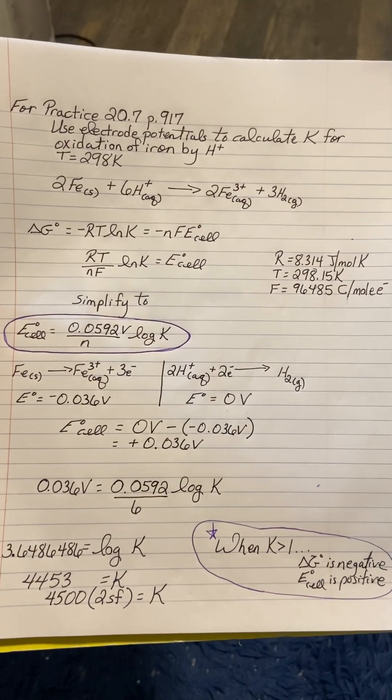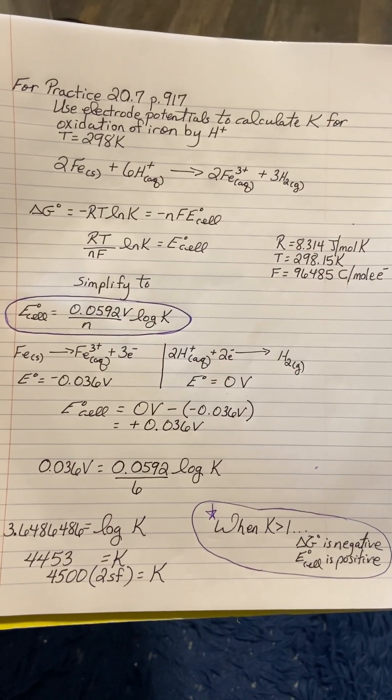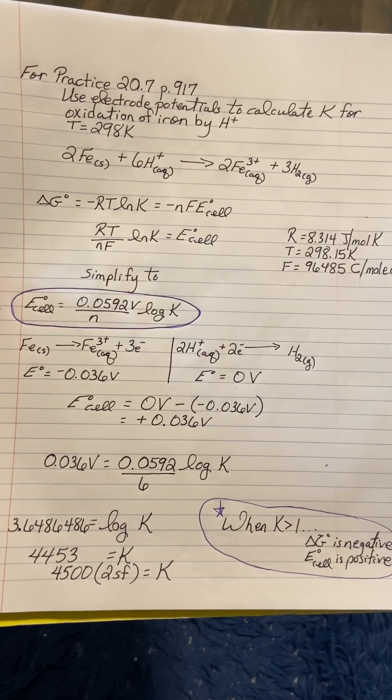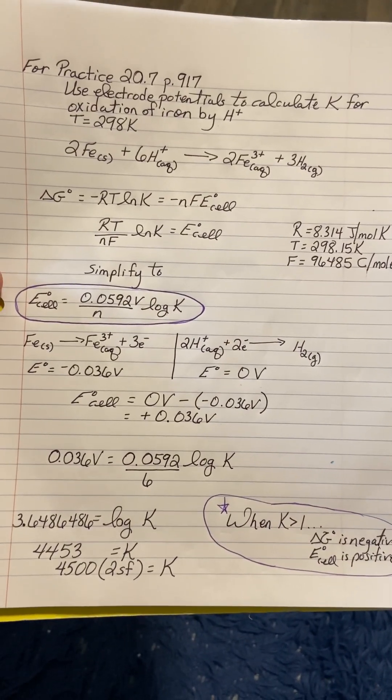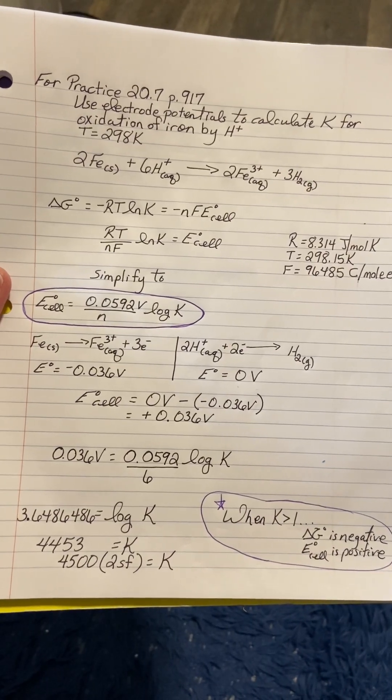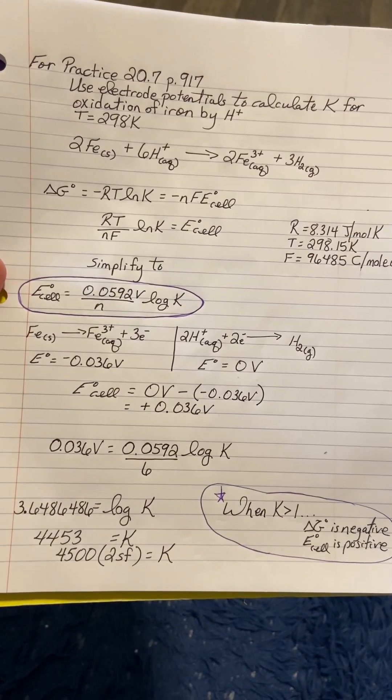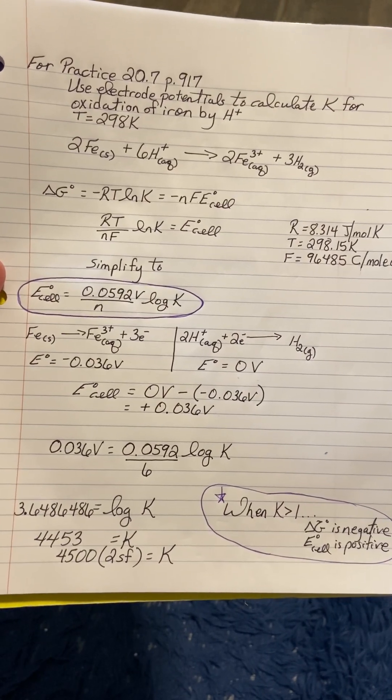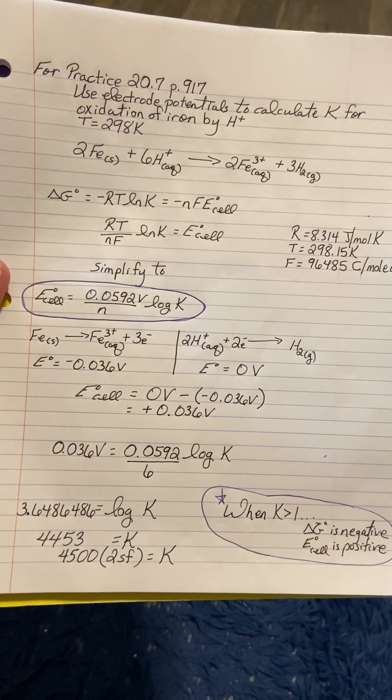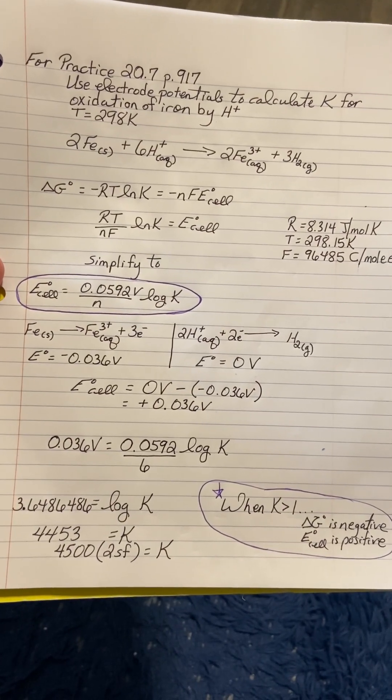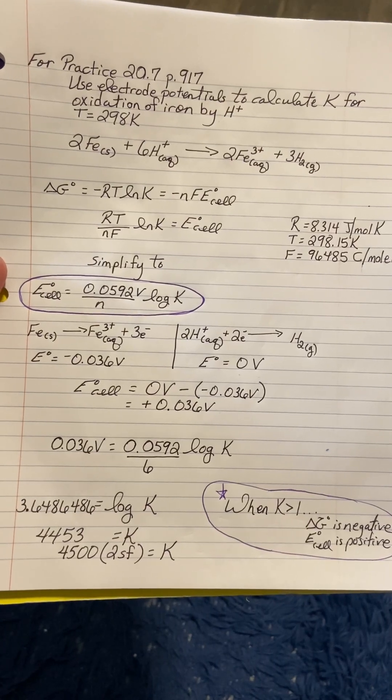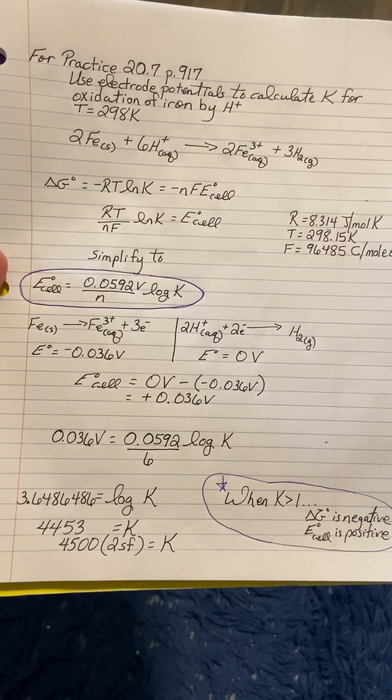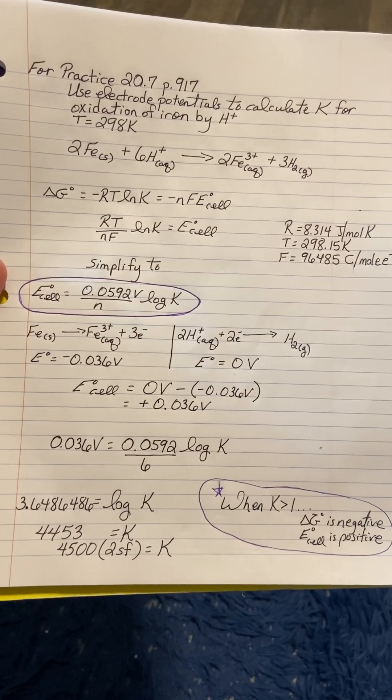We have our two half reactions and we've gone to the reduction potentials reference table to get the E values. We've got negative 0.036 volts and zero volts for our two half reactions. Remember that the one that is more positive is the cathode, the reduction site, and the other by default becomes the oxidation at the anode.